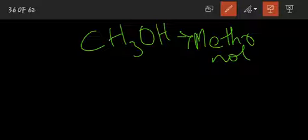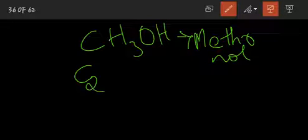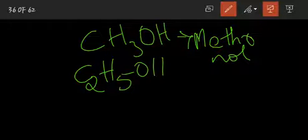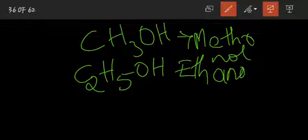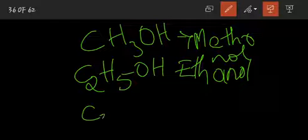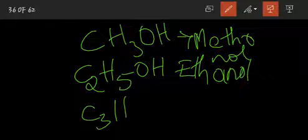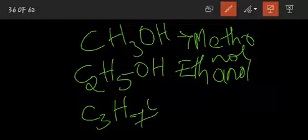So the first compound is methanol, written as CH3OH. The next compound is C2H5OH — this is ethanol, also called ethyl alcohol. And after that, C3H7OH — this is propanol.